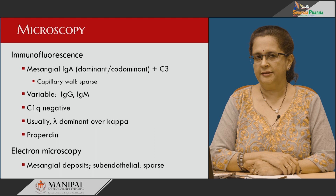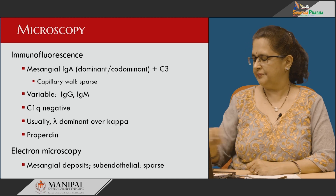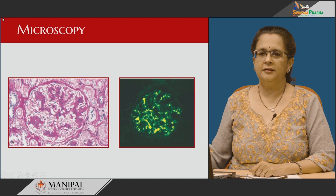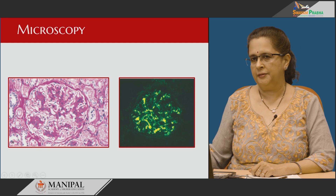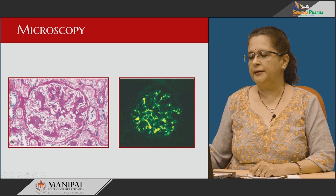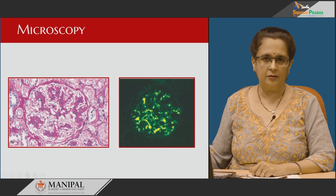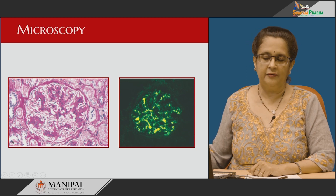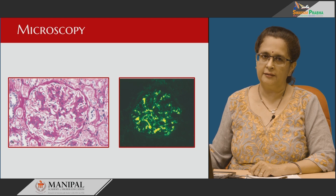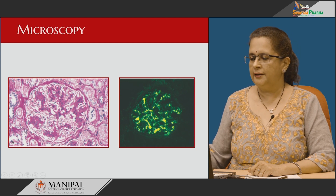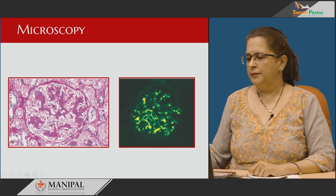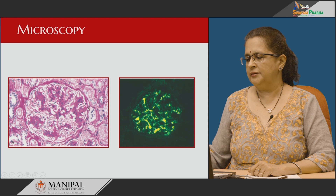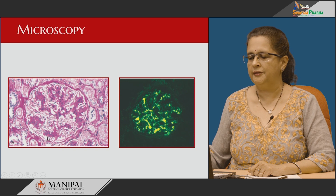Electron microscopy depicts mesangial deposits predominantly; rarely a few deposits can be seen in the subendothelial space. On periodic acid-Schiff stain, we can see expansion of the mesangium as well as an increased number of mesangial cells — mesangial hypercellularity, defined as more than 3 mesangial cells in the mesangial space. The endothelial capillaries look normal, tubules appear normal, and there is no epithelial proliferation in Bowman's space.